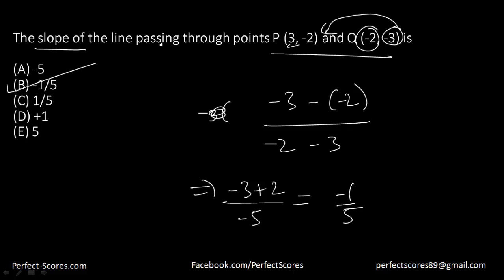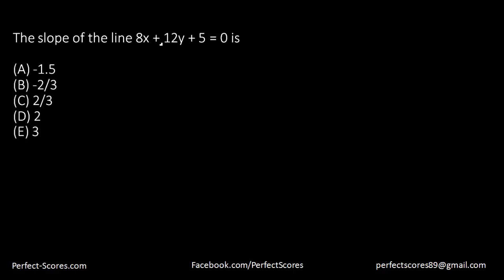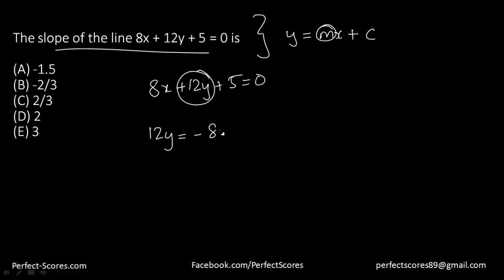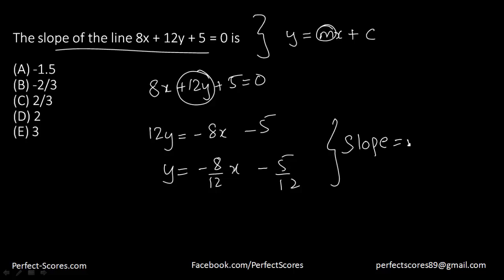I recommend you pause and try the next question yourself. The question asks for the slope of the line given by 8x plus 12y plus 5 equals 0. Bring it to y equals mx plus c format: 12y equals negative 8x minus 5, so y equals negative 8/12 x minus 5/12. The slope m is negative 8 over 12, which simplifies to negative 2 over 3.